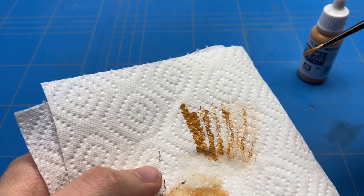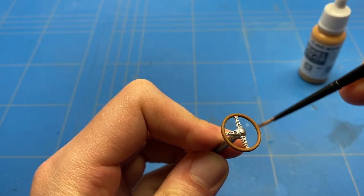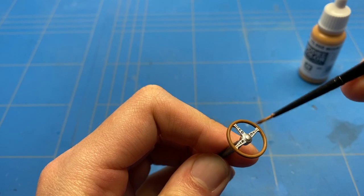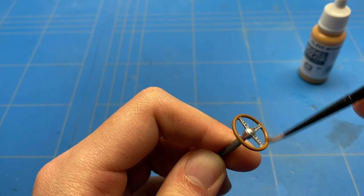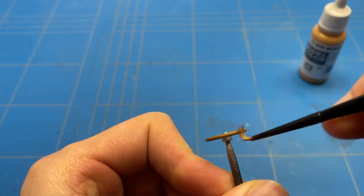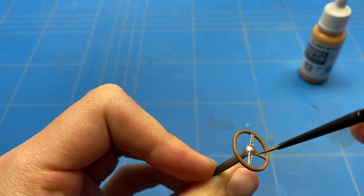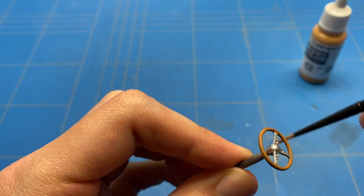With the first brown tone applied, I moved on to dry brushing a second lighter brown tone on top. I'm just applying a bit of paint to the brush and then wiping most of it off on the paper towel, then going randomly over the steering wheel in different ways, shapes, and forms to create a nice grain effect.